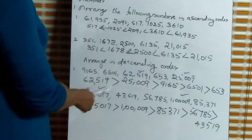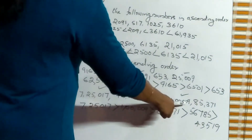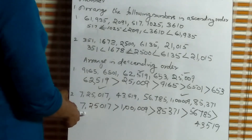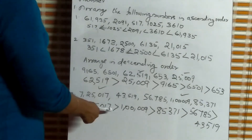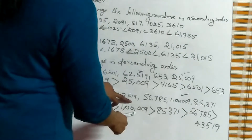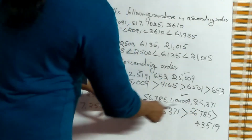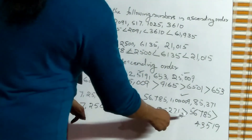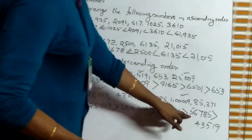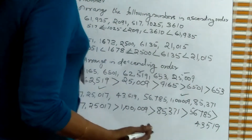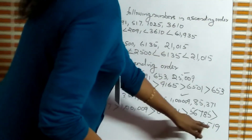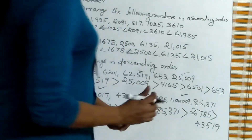Listen, second question. These are equal-digit numbers — all six-digit, same. From this, the greater number starts with seven. 7,25,070 greater than 1,09,199, greater than. Then the five-digit numbers: there are three of them. 85,371 is the greatest. 85,371 greater than 56,785 greater than 43,519.